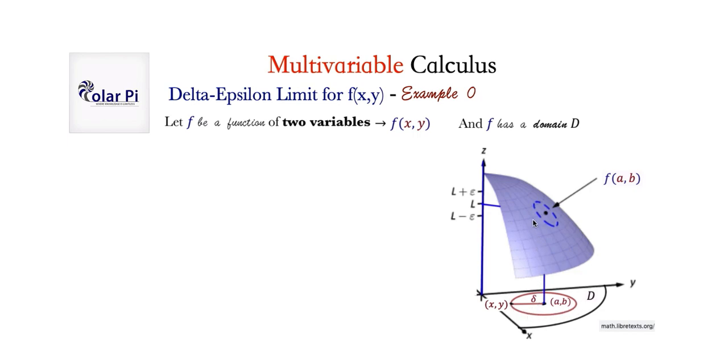And we have a surface here in the first octant that is a mapping of this domain D by f. And so, for example, the point a, b in the domain D is mapped by f onto this point on the surface, which corresponds to the z value l, right? So z equals f of a, b is equal to l, right?